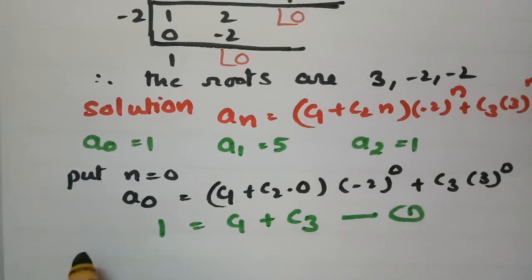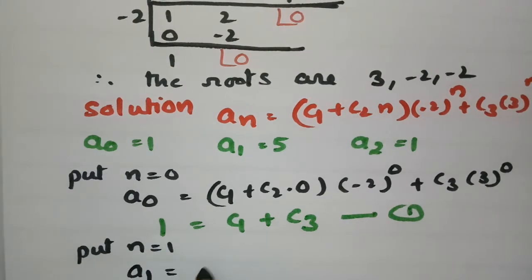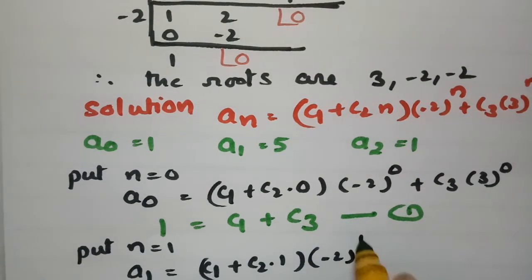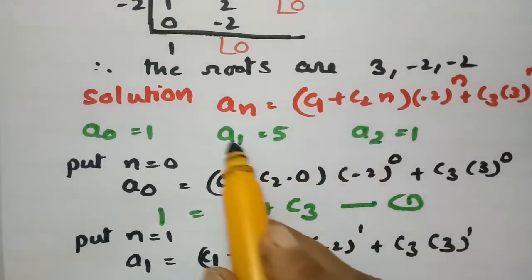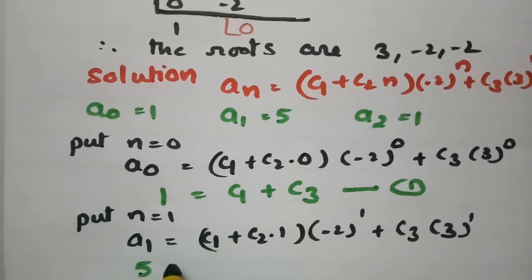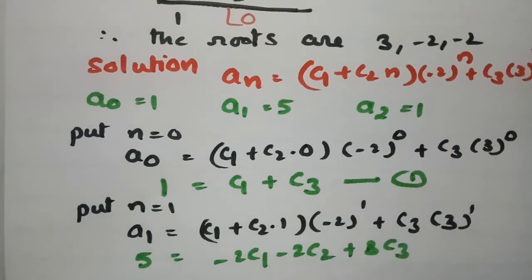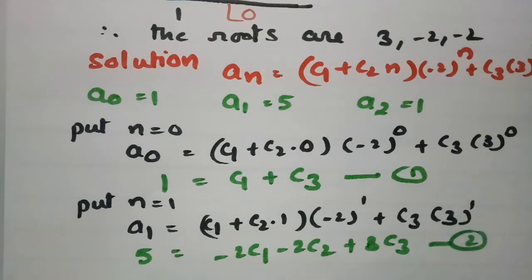Putting n equal to 1: a_1 equals (c1 plus c2 times 1) times (minus 2)^1 plus c3 times 3^1. Since a_1 is equal to 5, this simplifies to minus 2*c1 minus 2*c2 plus 3*c3 is equal to 5. This is equation 2.